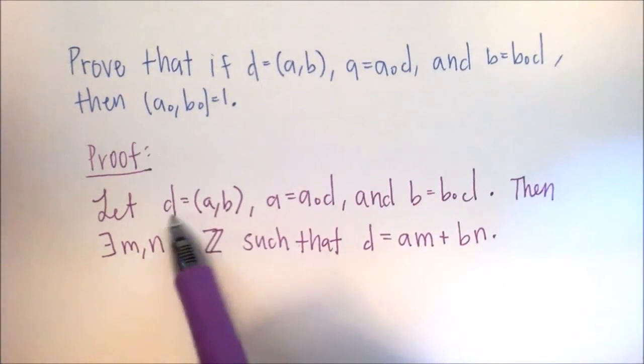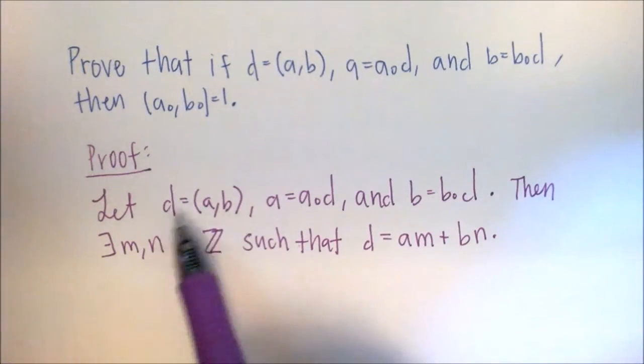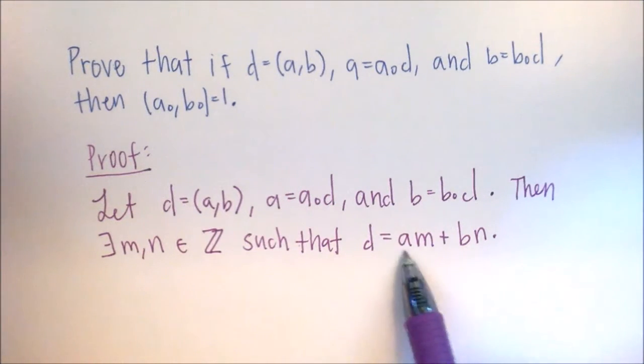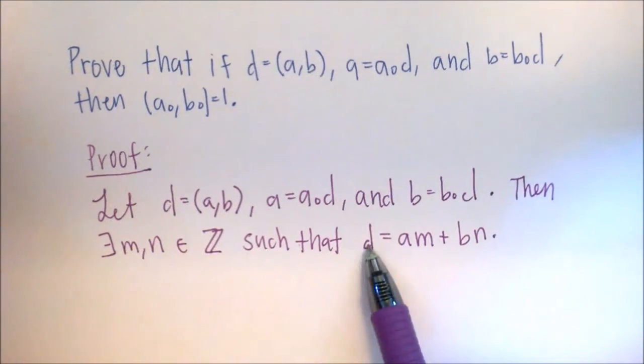So this statement and this statement are equivalent. So the GCD of A and B equals D is the same thing as saying that some linear combination, so some integer times A plus some integer times B equals to D.